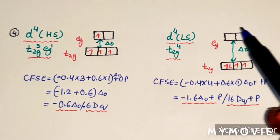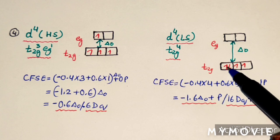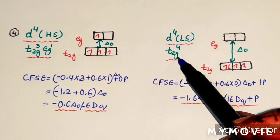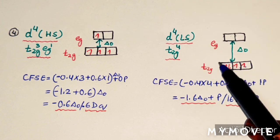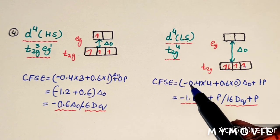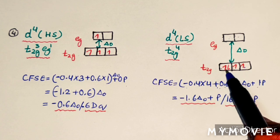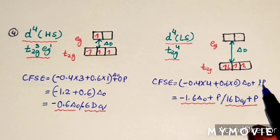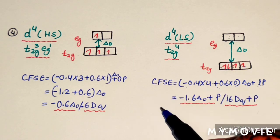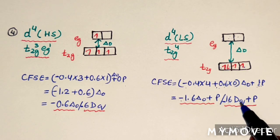For D4 low spin complex (strong field, large delta O), electrons fill as 1, 2, 3, 4 all into T2G, giving configuration T2G4. CFSE = 4×(−0.4) × delta O + 1×P = −1.6 delta O + P, or −16 DQ + P. Here pairing energy contributes because there is one paired electron.